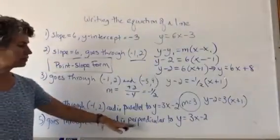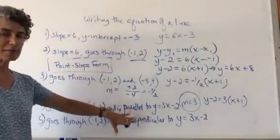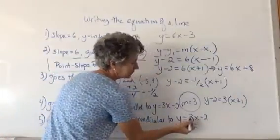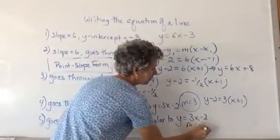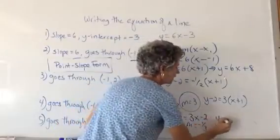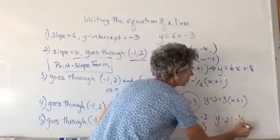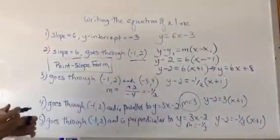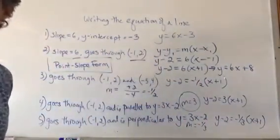Now for perpendicular lines: perpendicular lines have slopes that are negative reciprocals of each other. So here the slope would be the negative reciprocal of 3, which is negative 1 third. So y minus 2 equals negative 1 third times x plus 1. And again, you can leave it in point-slope form or you could change it.